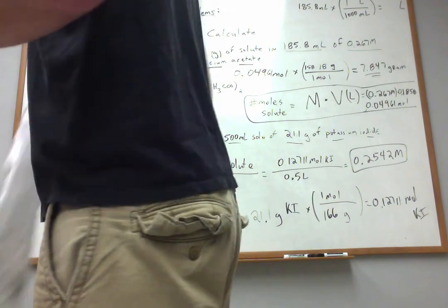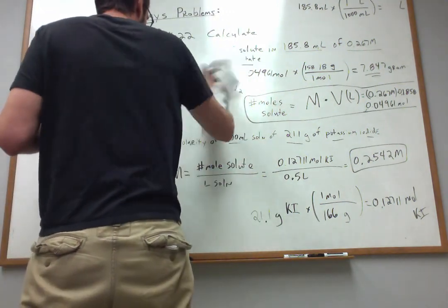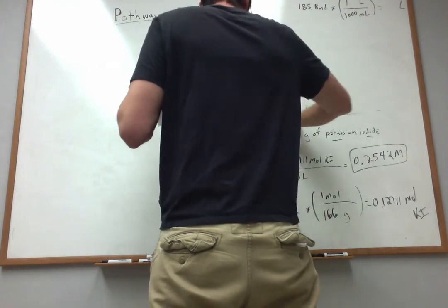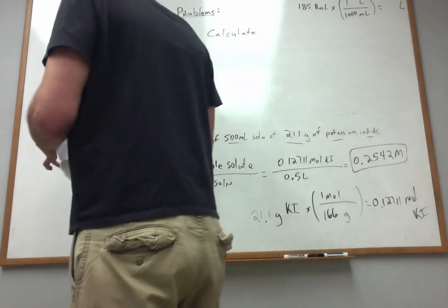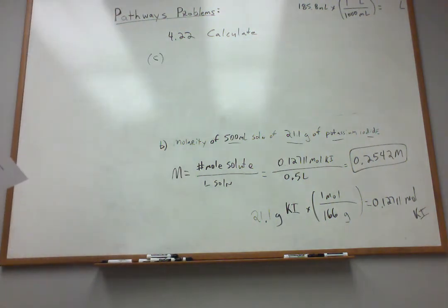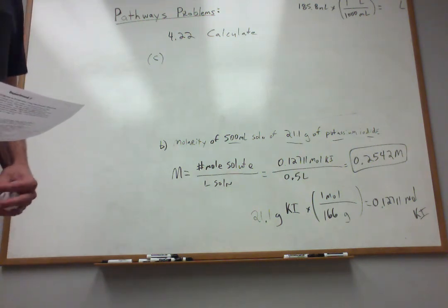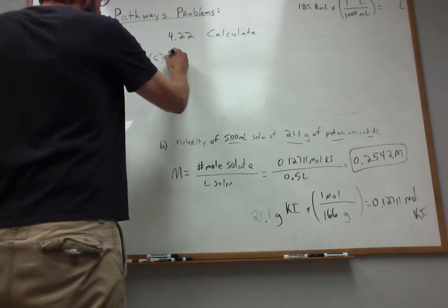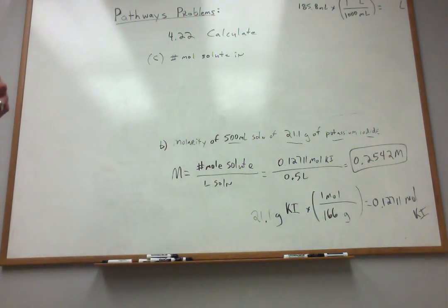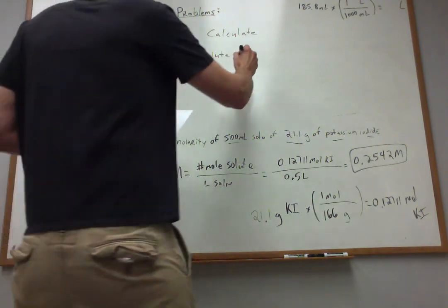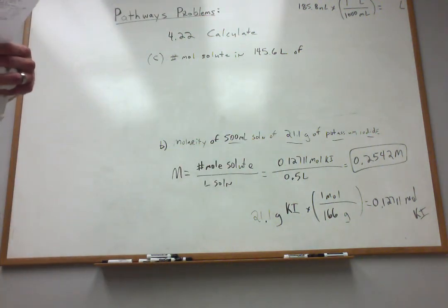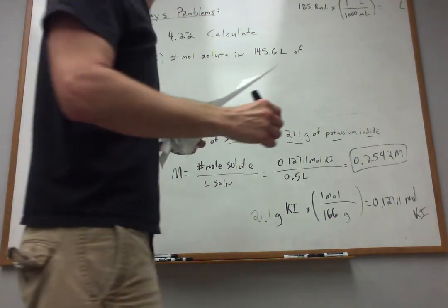Moving on to part C. Let's see what is part C. The number of moles of solute in 145.6 liters of 0.85 molar sodium cyanide.